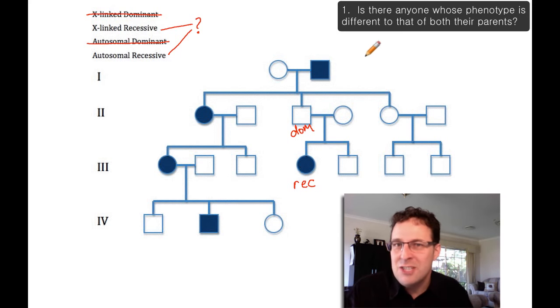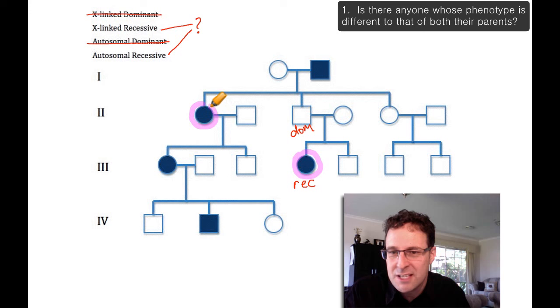In order to do that, we first need to identify all the girls in the pedigree who have the recessive phenotype. There are three of them. This girl, obviously, which is the one that we've just worked out. But also this girl here has the recessive phenotype. And this girl has the recessive phenotype too.